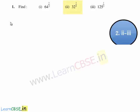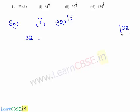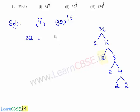Now let us move on to the second bit. The second bit given is to find 32 raised to the power of 1 by 5. Let us write 32 in its irreducible factors by finding the prime factors of 32. So 32 is 2 times 16, 16 is 2 times 8, 8 is 2 times 4, and 4 is 2 times 2. Therefore, the irreducible factors of 32 is 2 multiplied with itself 5 times, which is 2 raised to the power of 5.